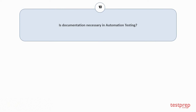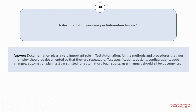Question number ten: Is documentation necessary in automation testing? Documentation plays a very important role in test automation. All the methods and procedures employed should be documented so that they are repeatable. Test specifications, operations, designs, configurations, code changes, automation plans, test cases listed for automation, bug reports, and user manuals should all be documented.